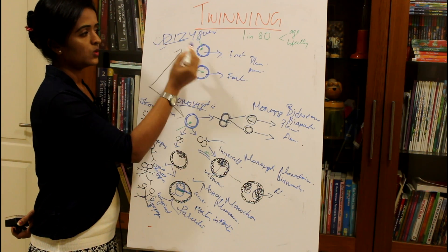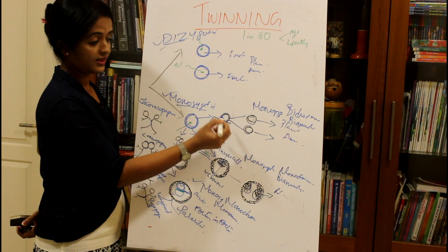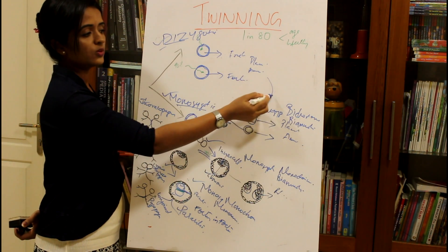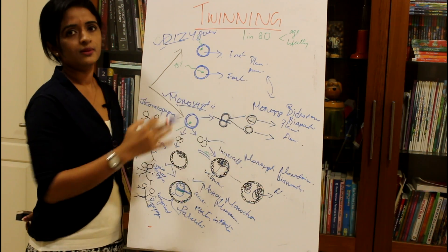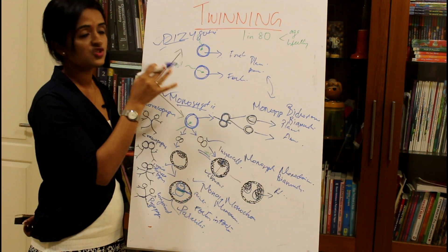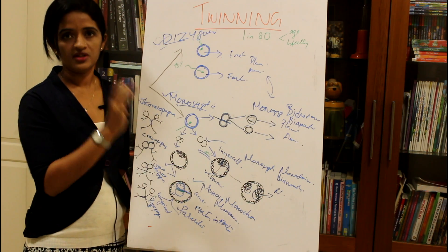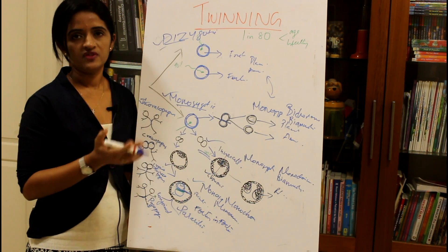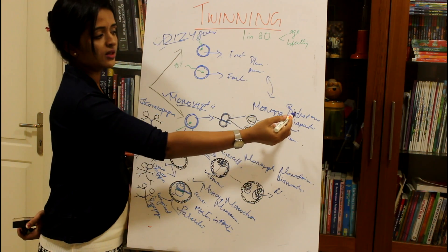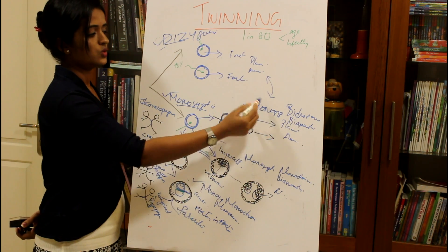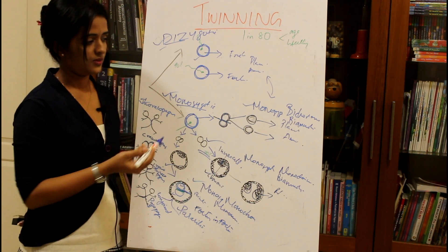Dizygotic twins (from two zygotes) and monozygotic bichorionic bi-amniotic twins (dividing at the two-cell stage) look almost the same — both having different chorionic and amniotic cavities. The major difference is that monozygotic twins share the same genetic constitution, while dizygotic twins have different genetic constitutions. Genetic analysis is needed to distinguish these two categories.